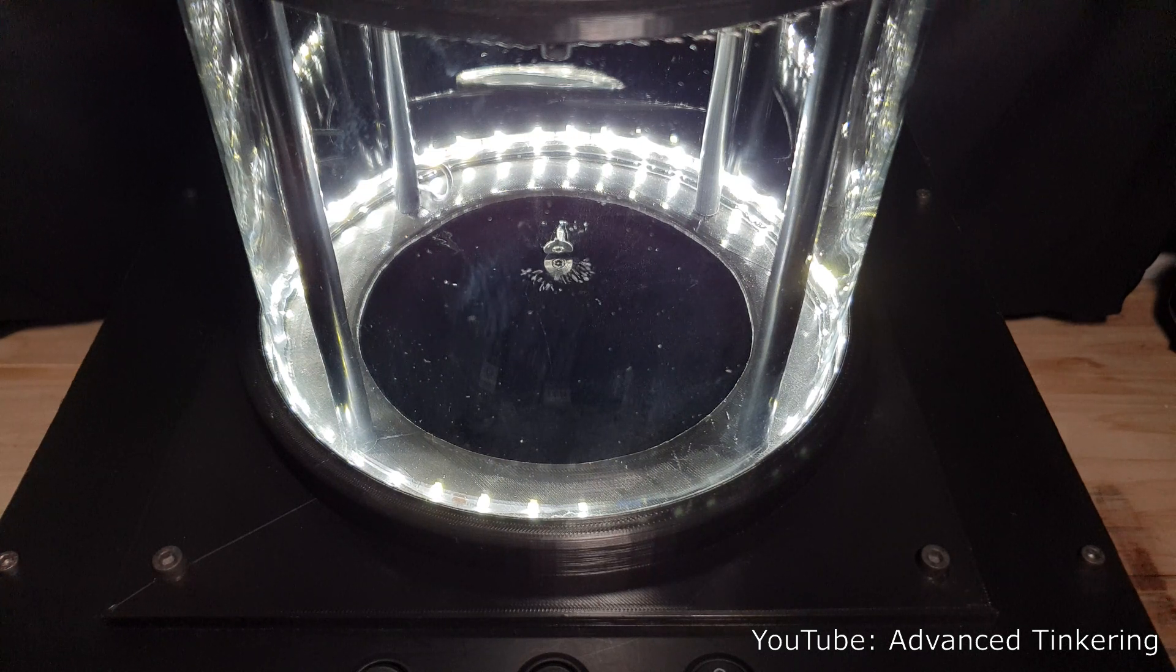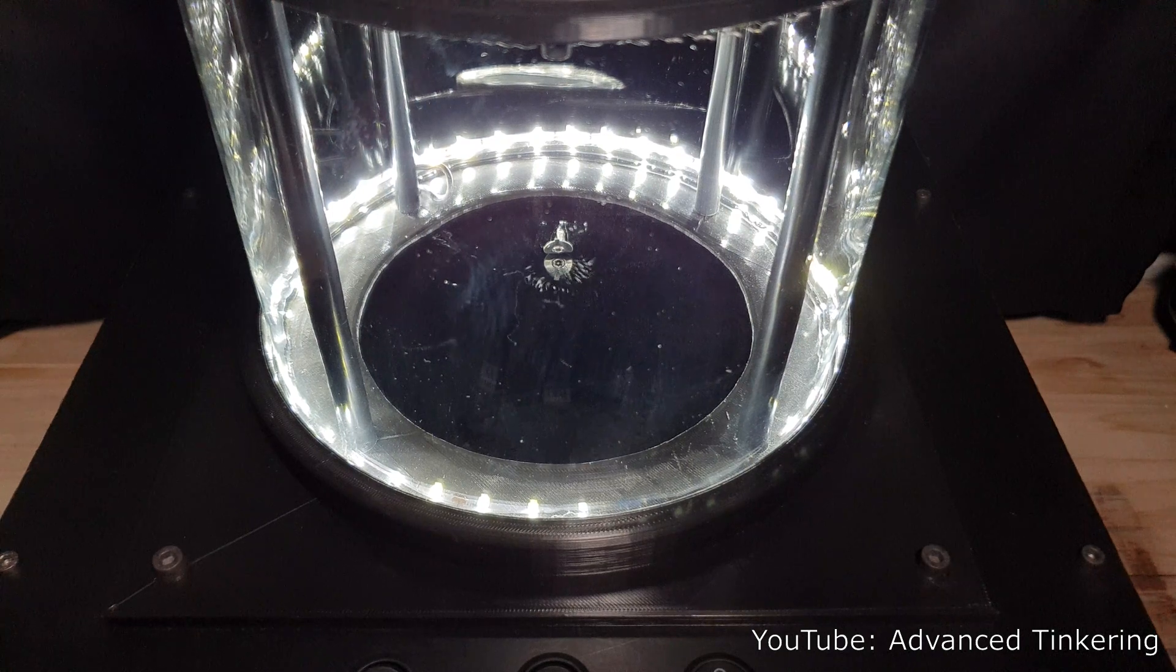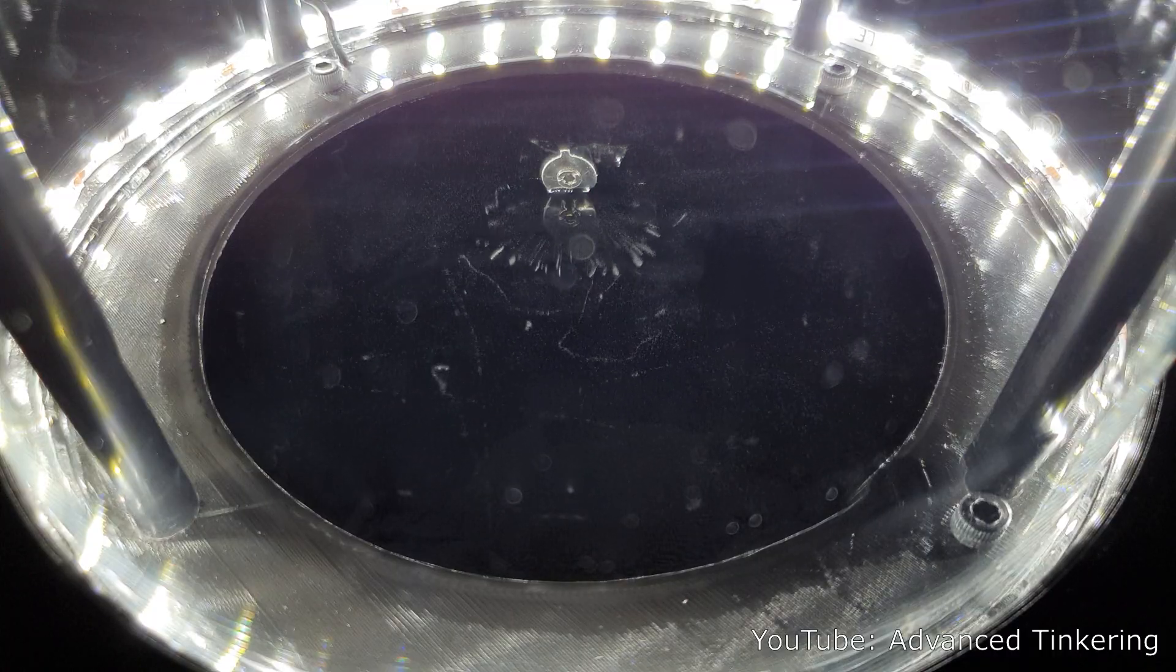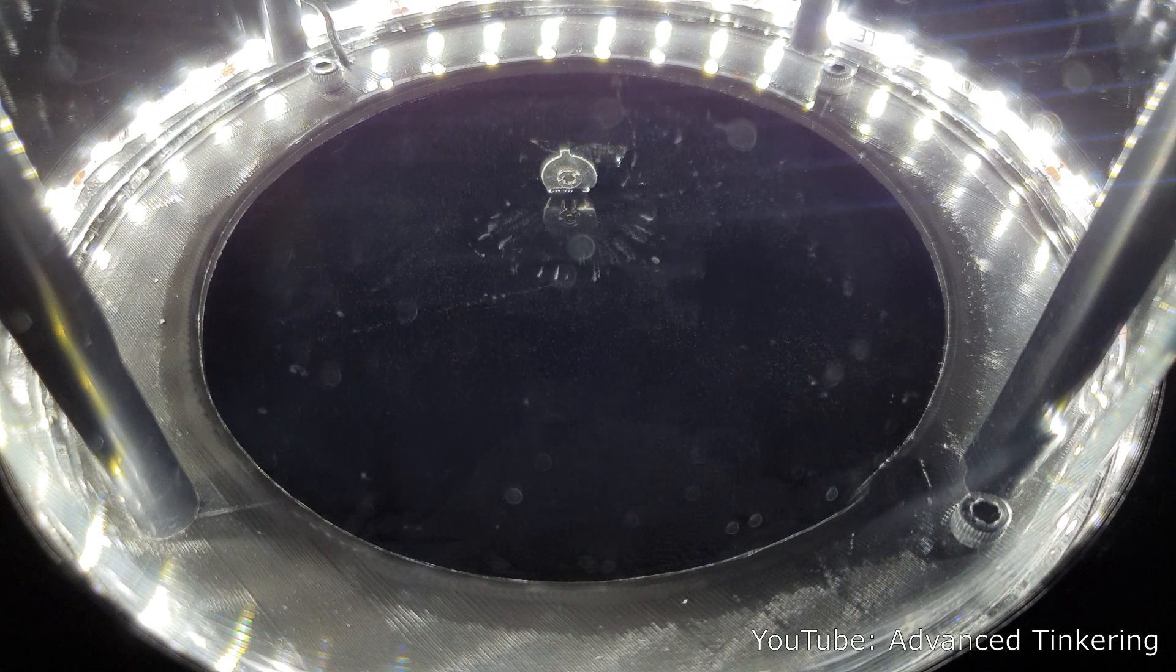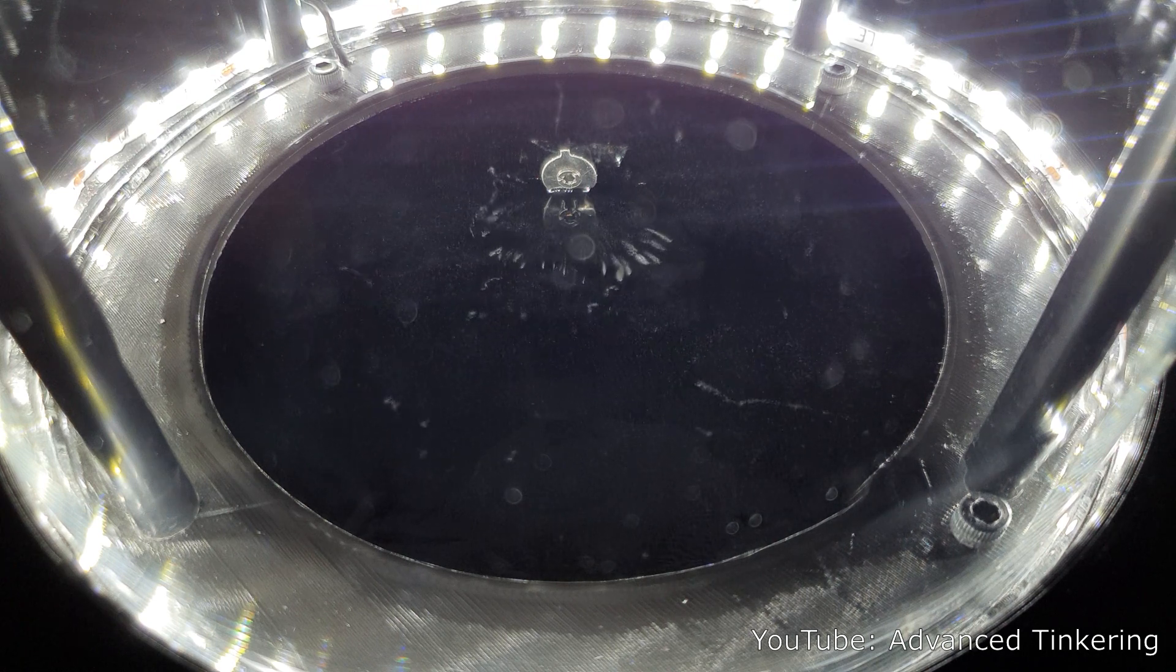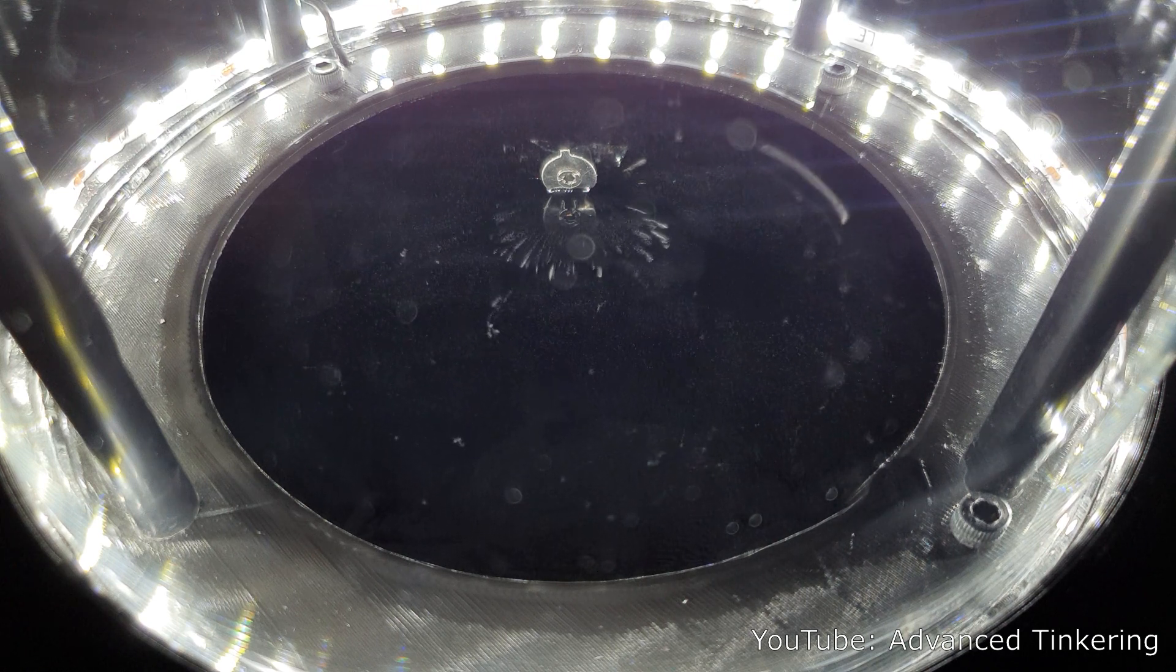When the cloud chamber is running, the alcohol on the felt will vaporize and a layer of supersaturated alcohol vapor will form above the cold plate. If something like an ionized particle disturbs the supersaturated vapor, the alcohol condenses and a cloud trail will form.